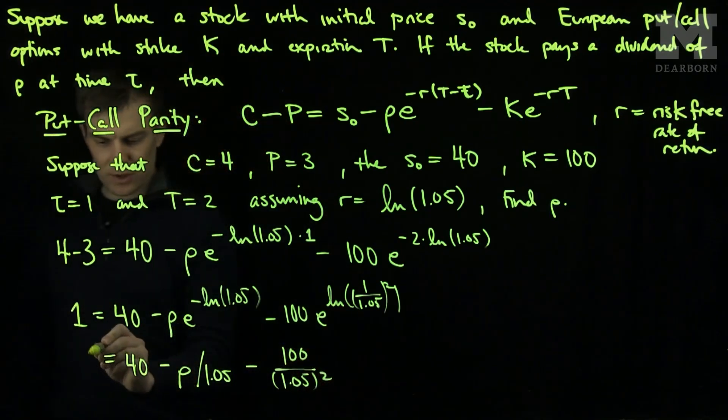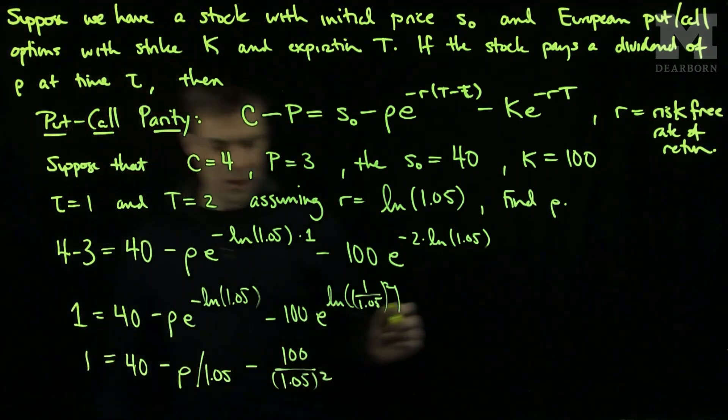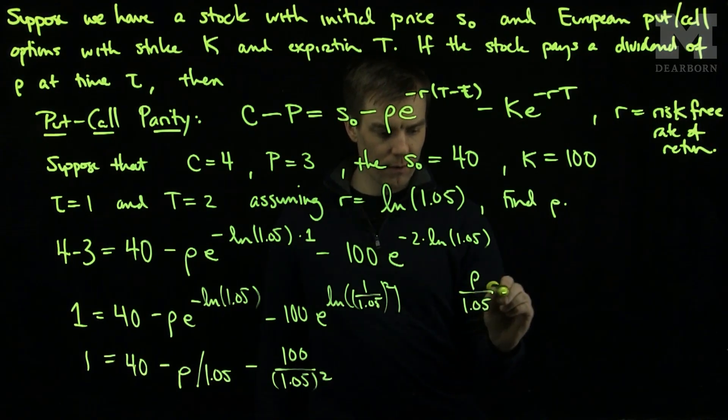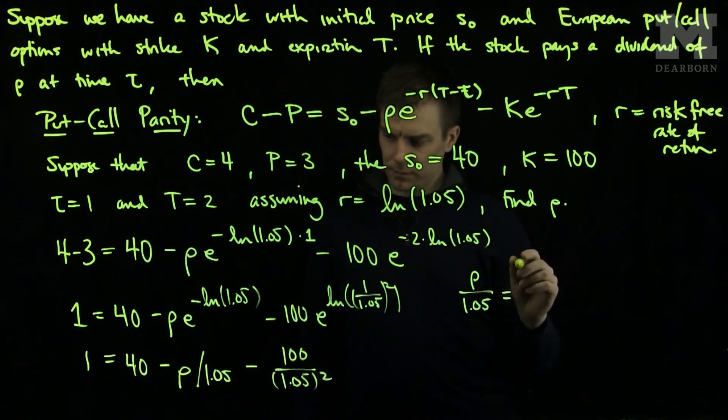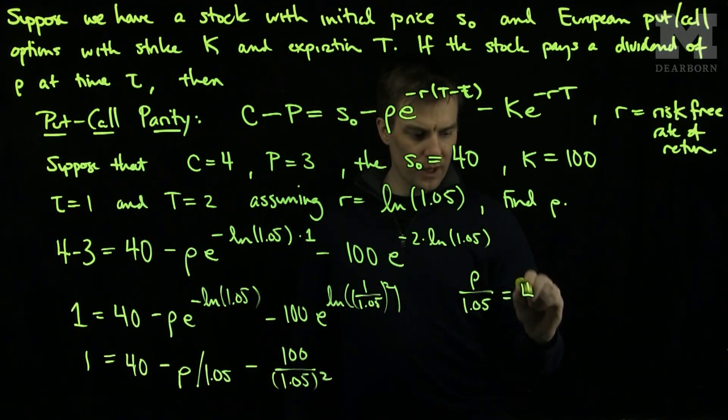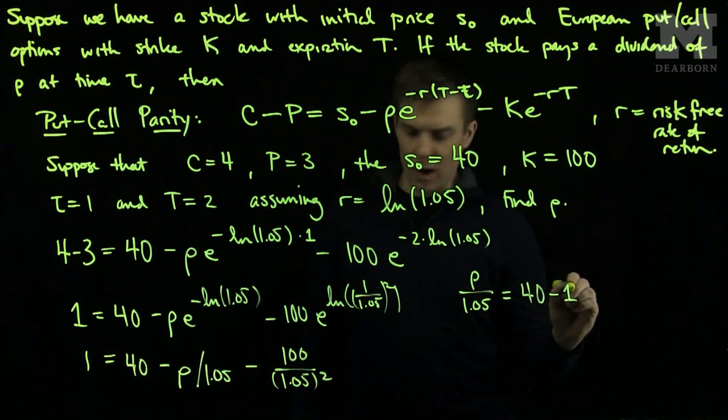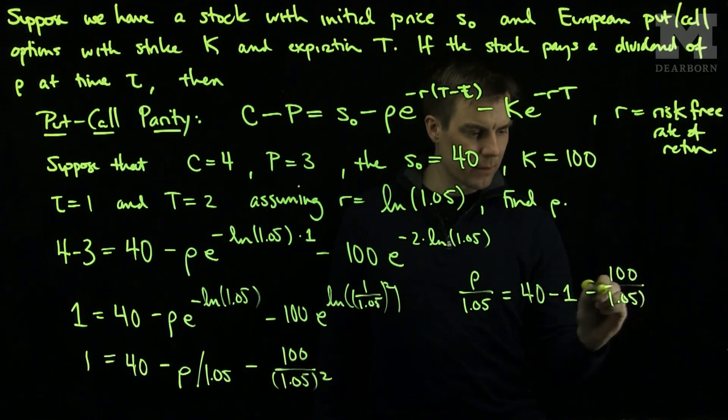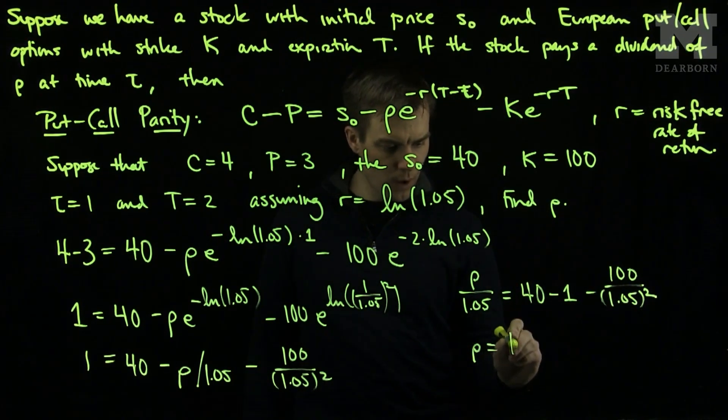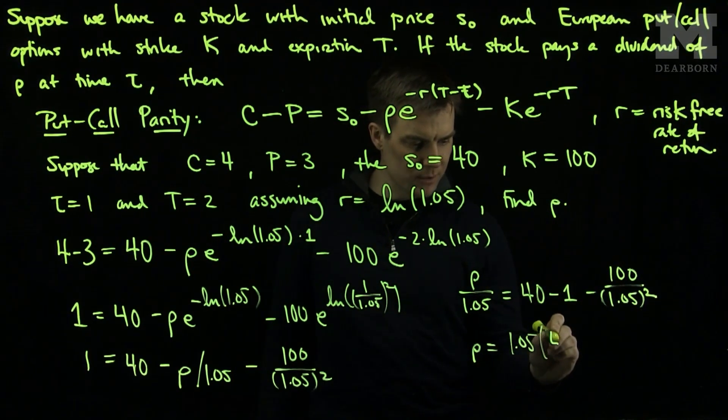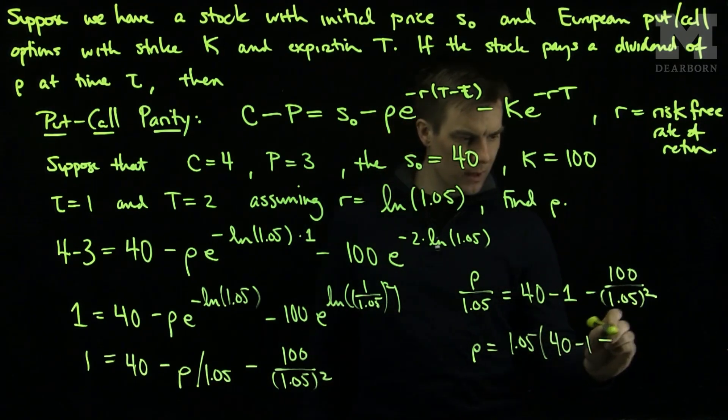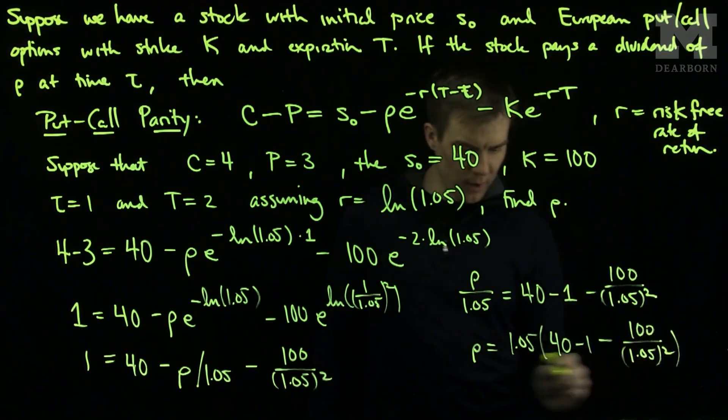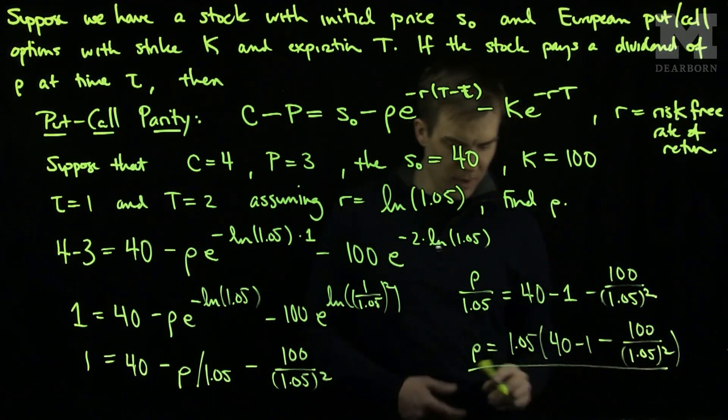So isolating this and solving for rho, we will put this on the other side of the equation. This tells me that rho over 1.05 equals 40 minus 1 minus 100 over 1.05 squared. Therefore, rho will be 1.05 times (40 minus 1 minus 100 over 1.05 squared). And that will be our dividend payment at this given time.